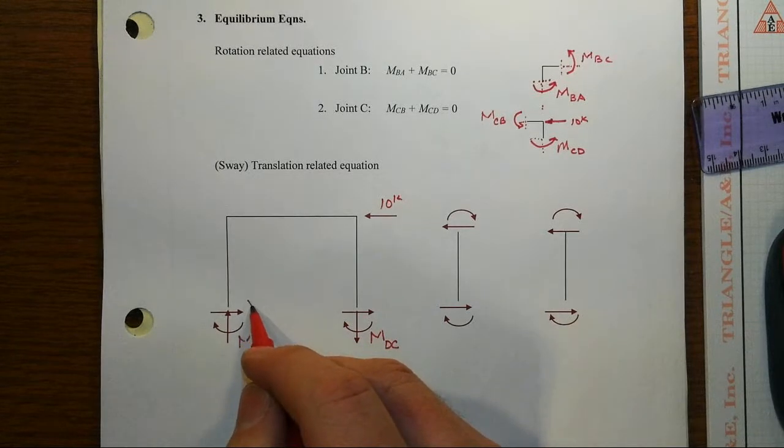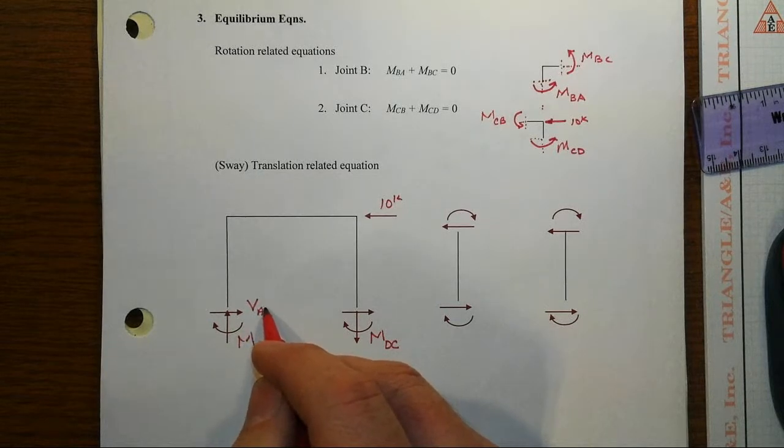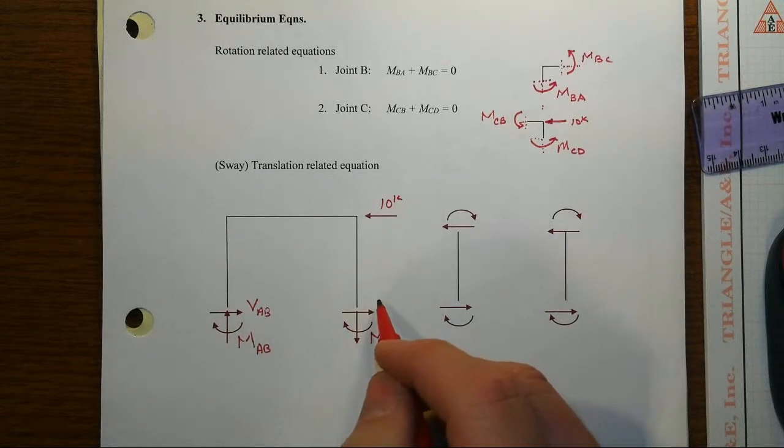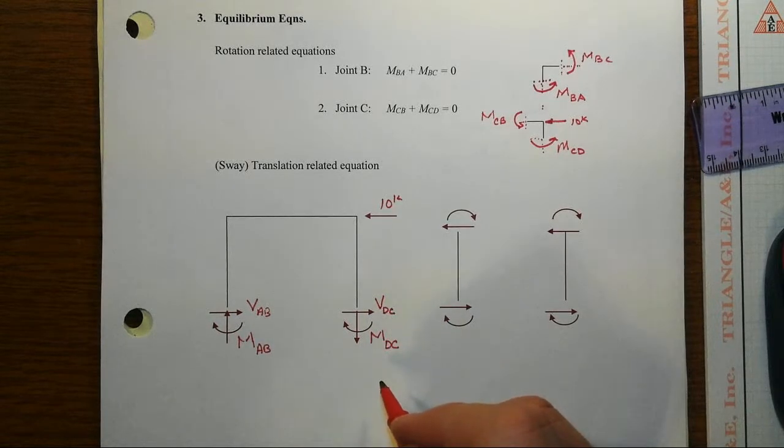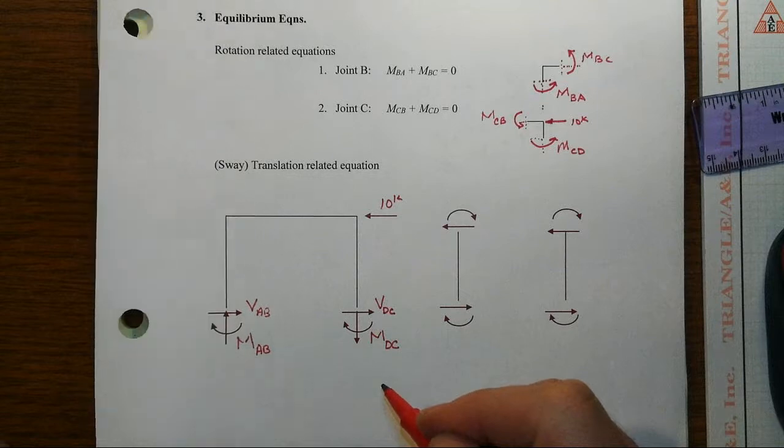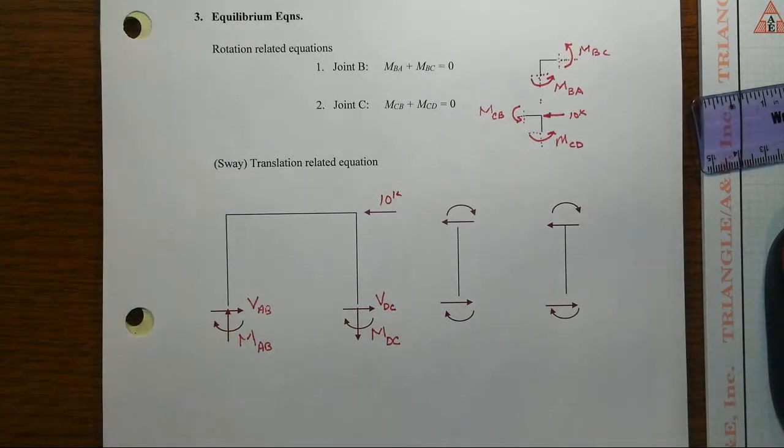The way we're going to do it is by looking first at the global situation. We've got VAB. I've chosen a particular direction for the unknown shear that is somewhat arbitrary, but it turns out to be fortuitous the way I ended up doing that.